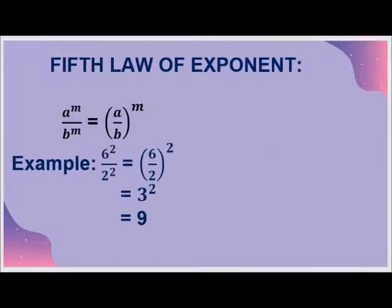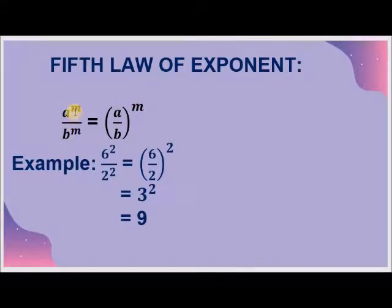The 5th law of exponent is a raised to the power m upon b raised to the power m is equal to a upon b to the whole power m. When the base is different and the power is the same and the terms are in division, we will divide the numbers and raise to the whole as the same power.